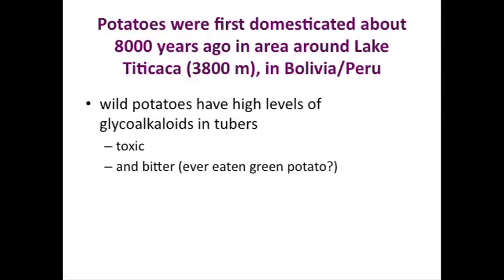Potatoes were first domesticated, it's thought, about 8,000 years ago around Lake Titicaca, which is on the border between Bolivia and Peru. Lake Titicaca is the highest navigable lake in the world. And in order for potatoes to become domesticated and spread around the world, there were really two key things that had to happen. The first was that we had to find ways to deal with glycoalkaloids, which are bitter and toxic compounds that accumulate in wild potatoes. And the second, which I'll get to, is about becoming adapted to long days.